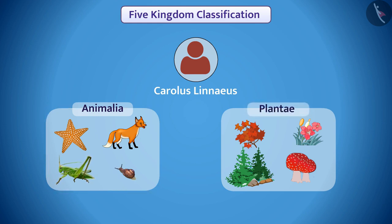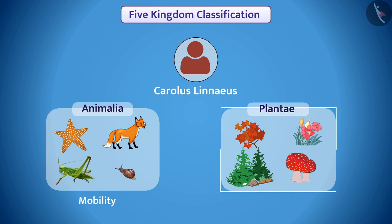This classification was made on the basis of mobility of the organism. Those organisms which can change their place are kept in the kingdom Animalia, and those organisms which cannot change their place are kept in the kingdom Plantae.